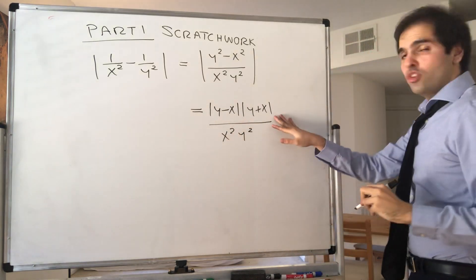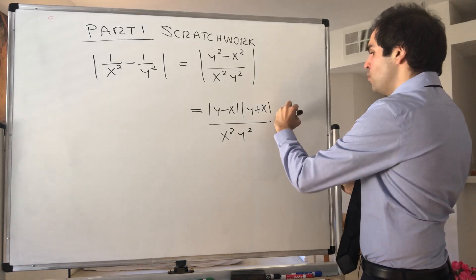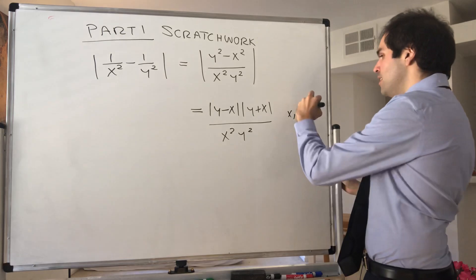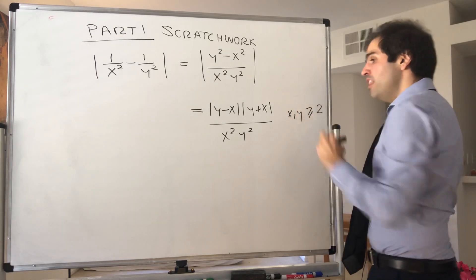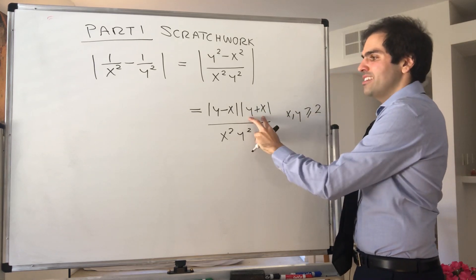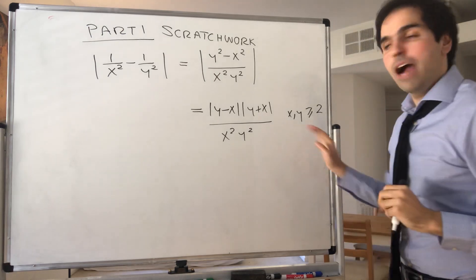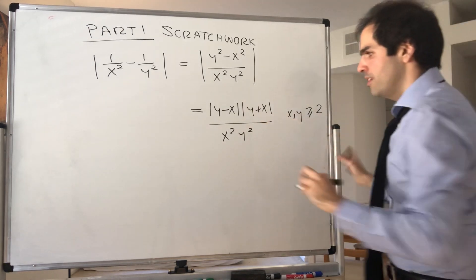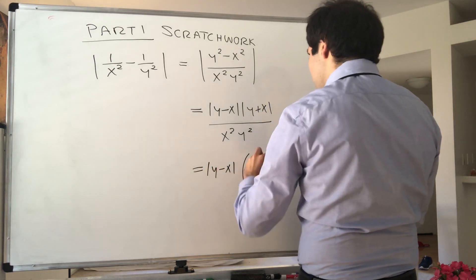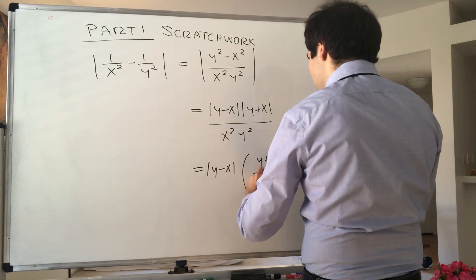Now, I would like to remind you, and again, the interval plays a huge role, that x and y are in the interval 2 comma infinity. So in particular, they're greater or equal to 2. And therefore, since they're positive, x plus y is positive. So we can remove the absolute value also here. Therefore, we get y minus x times y plus x over x squared y squared.